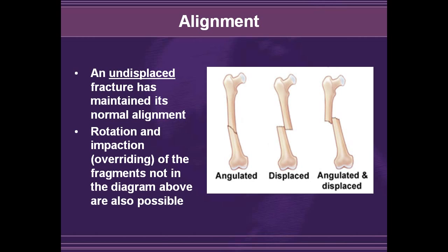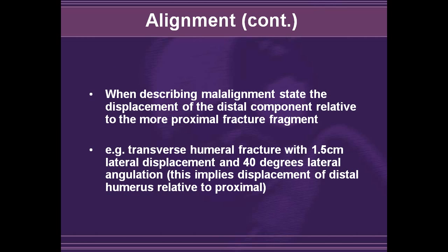An undisplaced fracture maintains its normal alignment. On the first image, there is an undisplaced but slightly angulated fracture. The next image shows a displaced fracture with complete overlapping, and the third image is both displaced and slightly angulated — and also slightly shortened because the two fracture fragments have moved closer to one another. When describing malalignment, the displacement of the distal component relative to the more proximal fracture fragment is what you are referring to. For example, a transverse humeral fracture with 1.5 centimeters of lateral displacement and 40 degrees of lateral angulation implies the distal humerus is 1.5 centimeters lateral relative to the proximal humerus.